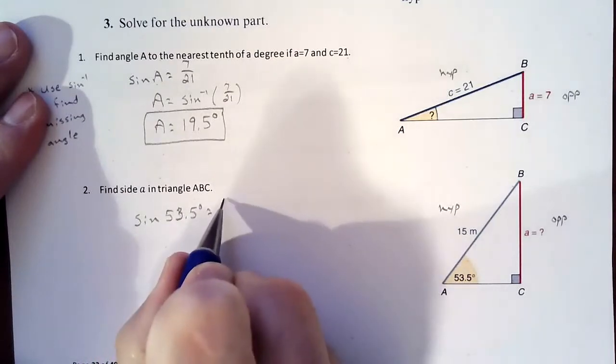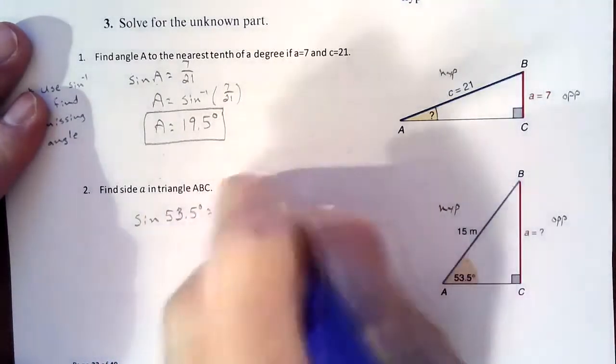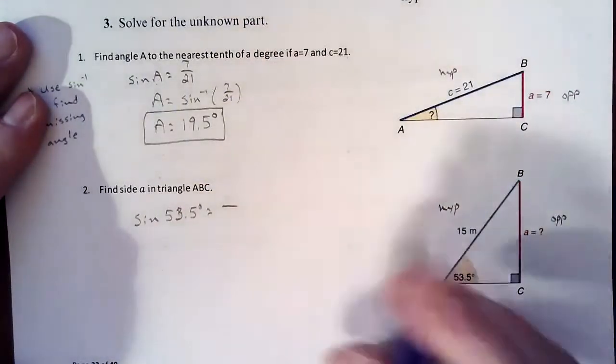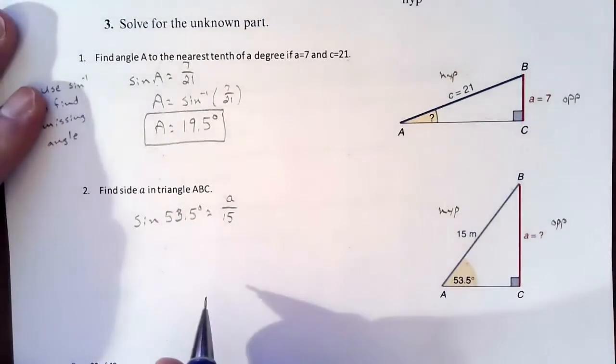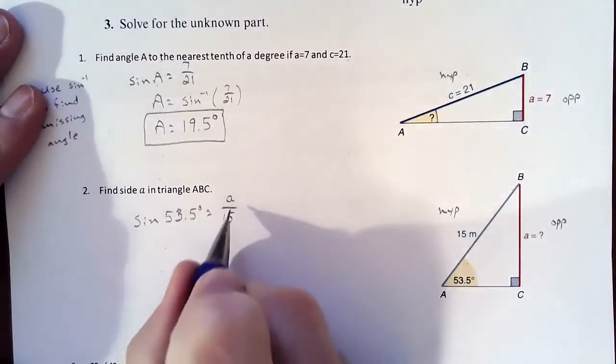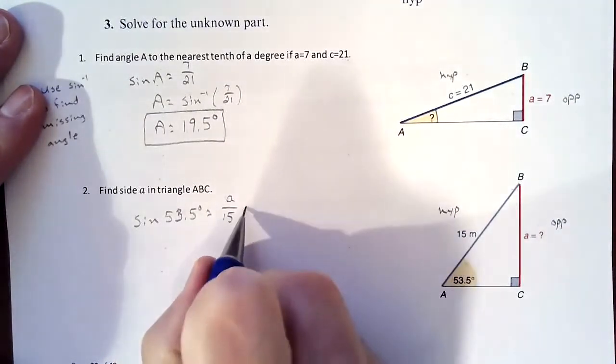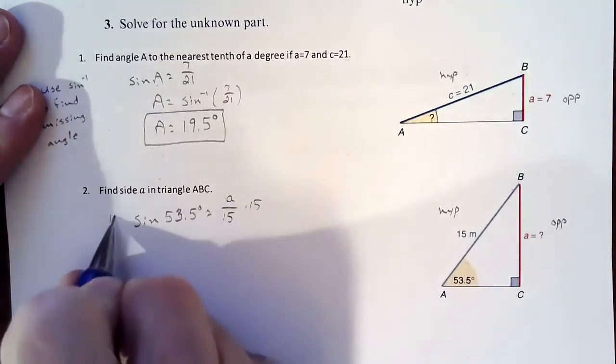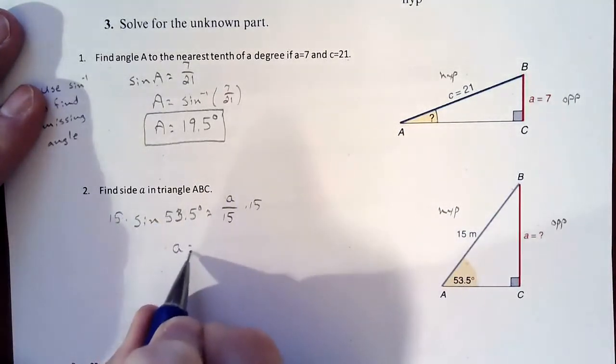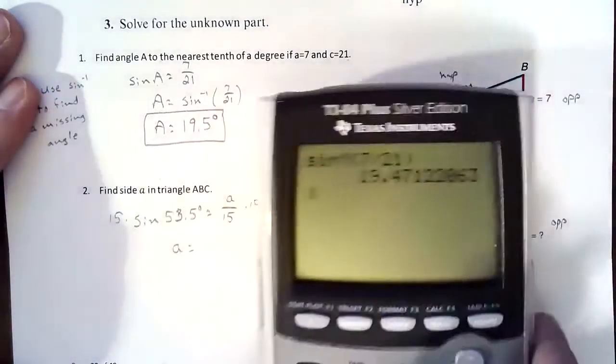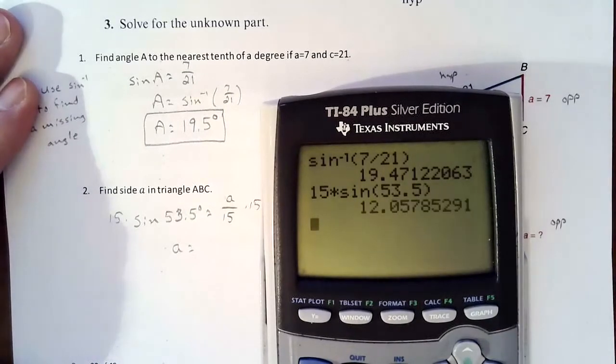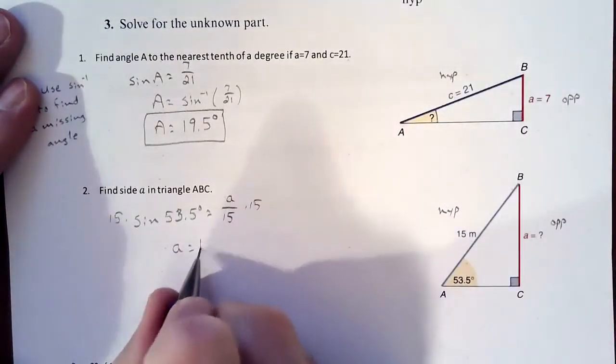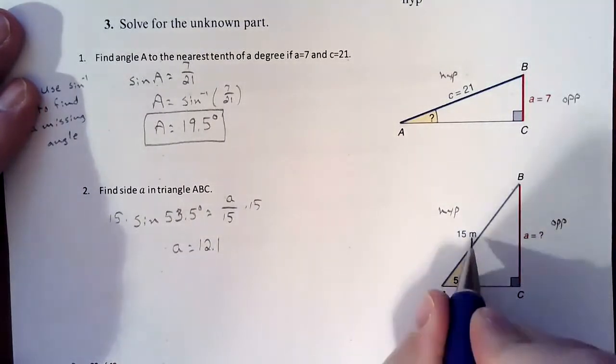is going to equal opposite, which we don't know. We'll say it's an A, since that's the piece they're calling it over there, over hypotenuse which is 15. So this time we're trying to solve an equation. We're trying to get A by itself. So we're going to clear out the 15 by multiplying it over. So we're going to take 15 times sine 53.5 degrees. So that's going to get us 12.1 meters.